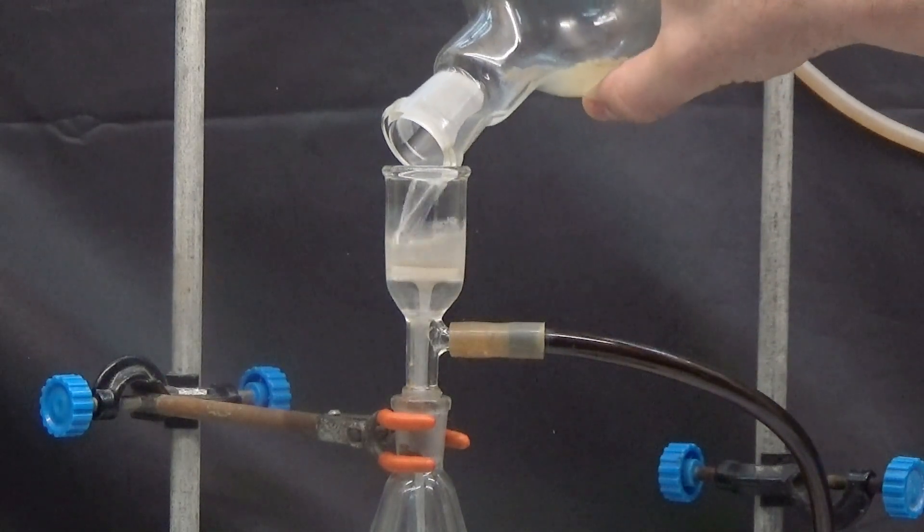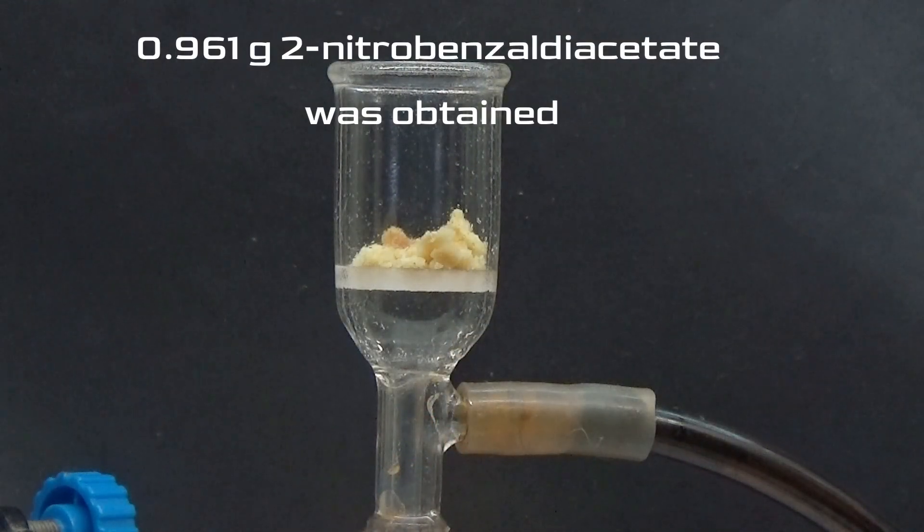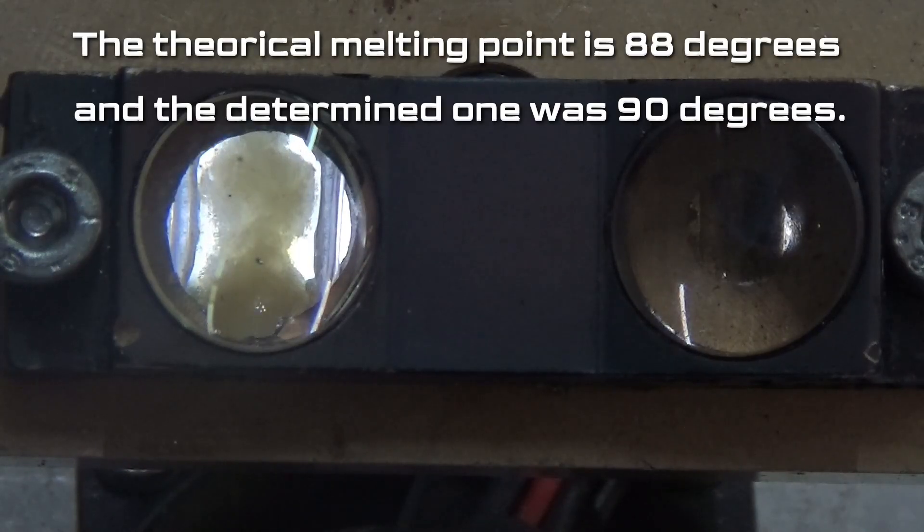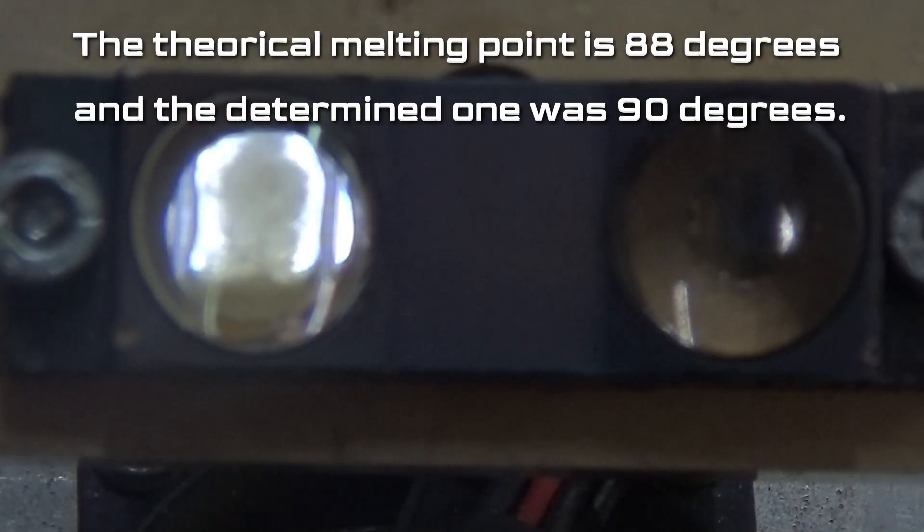From this product 0.961g was obtained, determine the melting point. The actual melting point is 88 degrees and the determined one was 90 degrees.